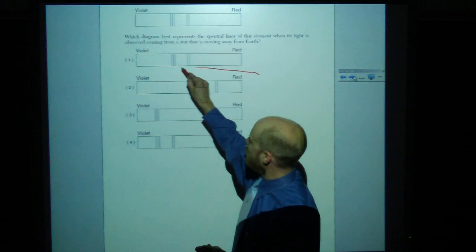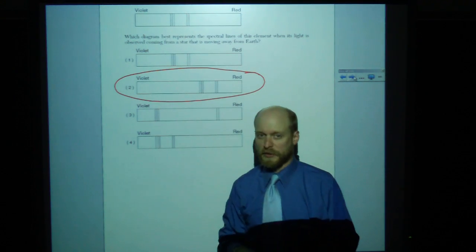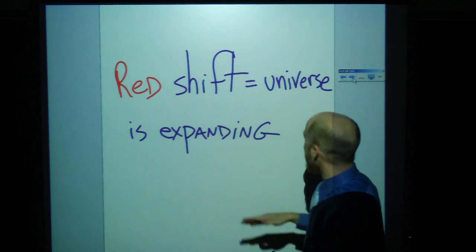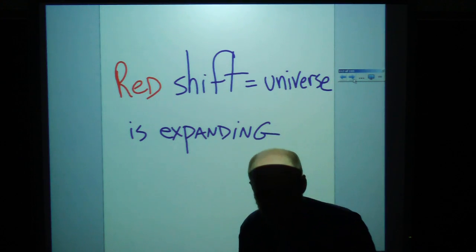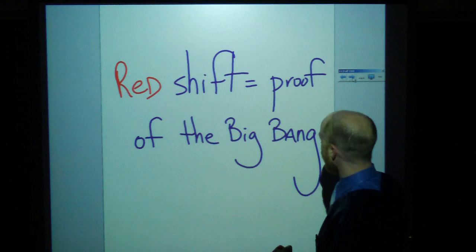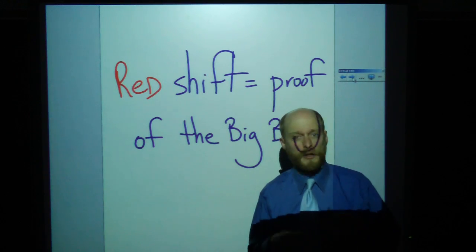So this is your answer. Things in space are moving away because the spectral lines are shifted towards the red. At the very least, know that and also know, you see this phrase, red shift? That is evidence. The universe is expanding, or proof of the Big Bang. Either one of those.